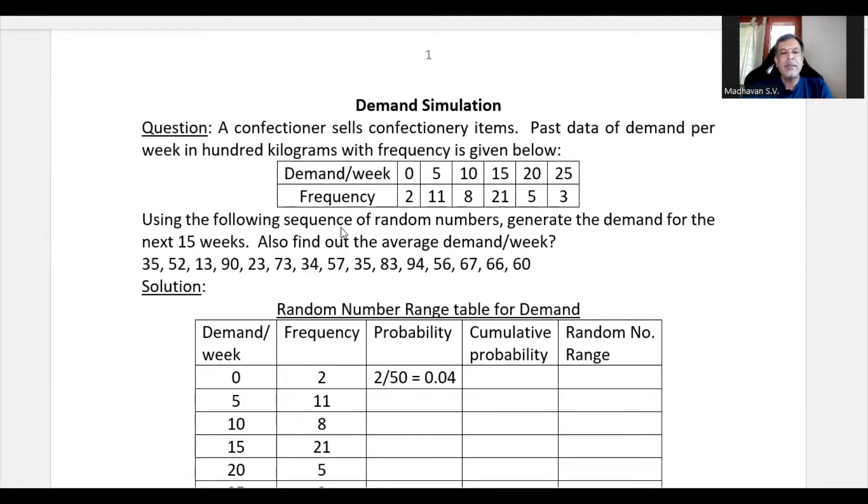Using the following sequence of random numbers, generate the demand for the next 15 weeks. Also find out the average demand per week and the random numbers are given like 35, 50, 30, 90, 23 and so on up to 60. We may notice that all these random numbers are two digit random numbers given in the question.